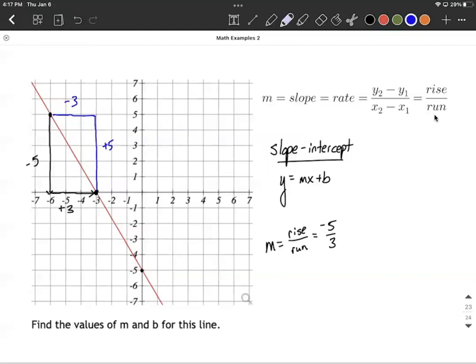All right. Equivalent, whether it's positive 5 over negative 3 or negative 5 over positive 3, those mean the same thing.